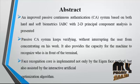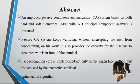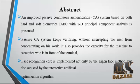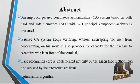In this paper, an Interactive Passive Continuous Authentication (CA) System based on both hard and soft biometrics is presented. Human facial features are used as hard biometric information for the authentication process, and the clothes colors of the user are employed as the soft biometric information. The Passive CA System keeps verifying without interrupting the user from concentrating on their work, and provides the capacity for the machine to recognize who is in front of the terminal.